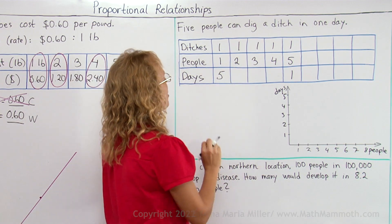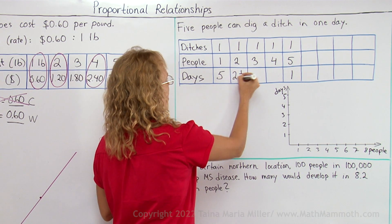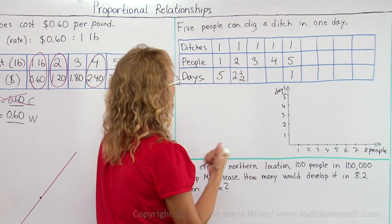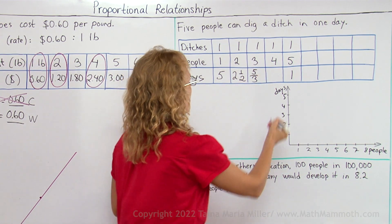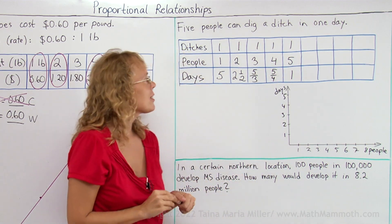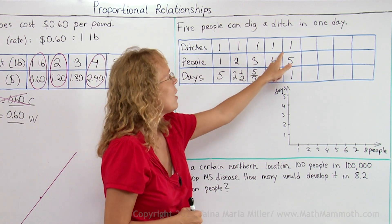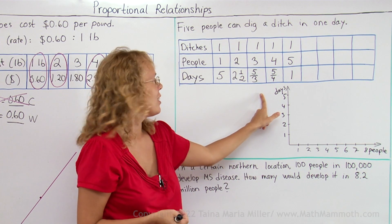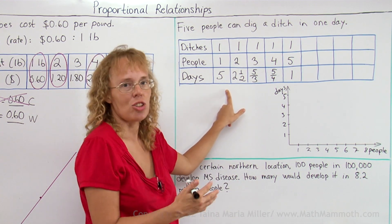What about if we have two people digging that one ditch? They should take two and a half days, right? And then if we have three people, it's going to be five-thirds days. And here five-fourths, or one and one-fourth days. We can see that whenever the number of people increases by one, these amounts don't increase by the same amount — in fact they decrease. This is not a proportional relationship at all.